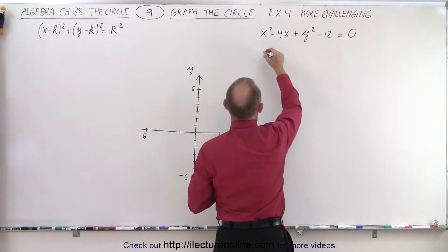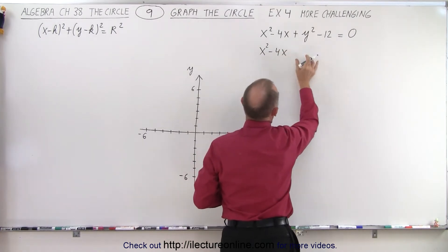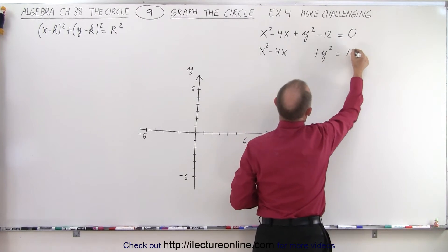So the first thing we're going to do is do this. x-squared minus 4x, leave some space, plus y-squared is equal to a positive 12.